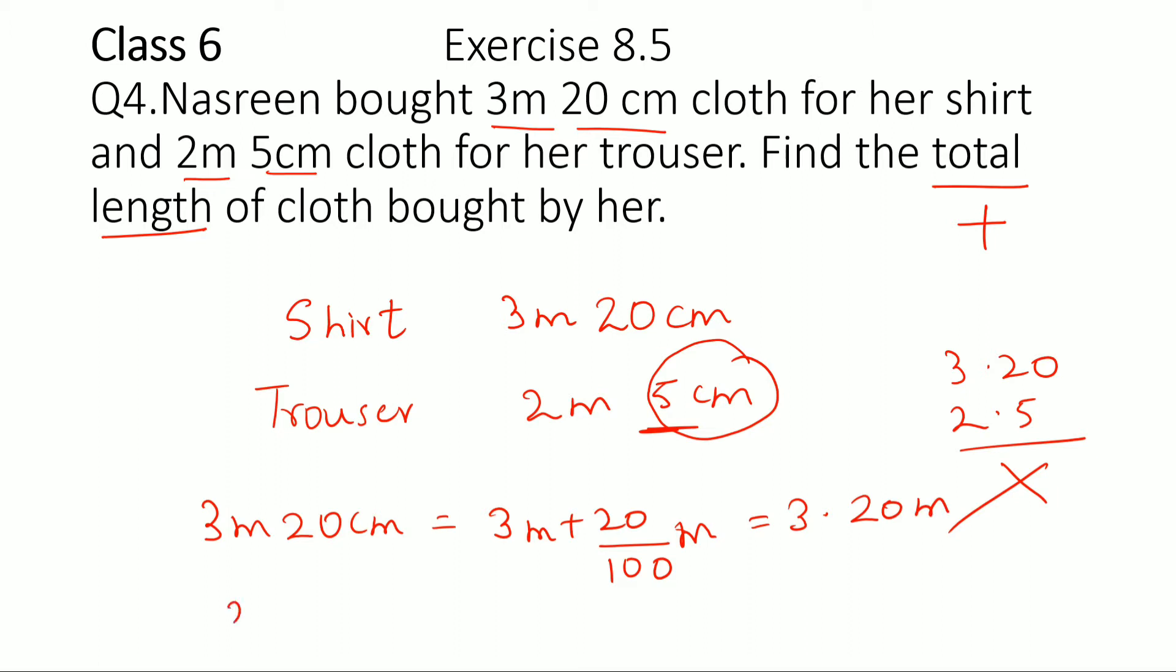And for the trouser, it's 2 meter 5 centimeter. So this would be 2 meter plus 5 by 100 meter, and that is 2.05 meter. And then we have to add up these two. So you have to be very careful with this number because it says 5 centimeter.